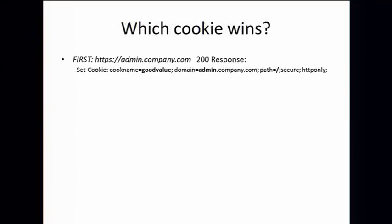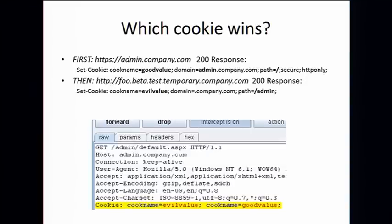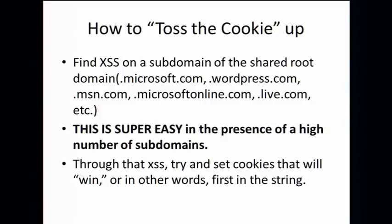Even with a long domain like chicken.monkey.camel.emu.secure.microsoftonline.com/site, our evil cookie is still at the head of that list. So which cookie wins? If admin.company.com sets a good value for cook_name with all the flags we encourage — secure, HTTP-only, and so on — and then there's a reflected or stored cross-site scripting in a less valuable domain like foo.beta.temporary.company.com, and we set cook_name to an evil value with a more specific path slash/admin scoped to company.com, the evil cookie actually comes first in the request to admin.company.com/admin. Google documented this well in the Google Browser Security Handbook — under Internet Explorer it just says the order is random, but in most cases the most specific cookie does win.